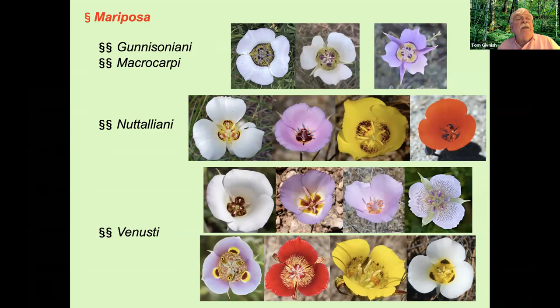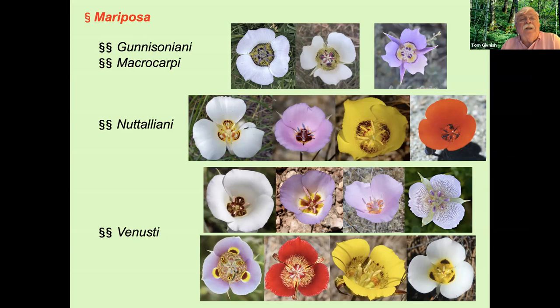The large subsection Venustus has glands that lack a membrane and are not depressed. The species shown include Catalinae, Flexuosus, Palmeri, and Striatus in the first row, and Superbus, Venustus, Luteus, and Leichtlinii in the second row—just a portion of the members of that subsection.